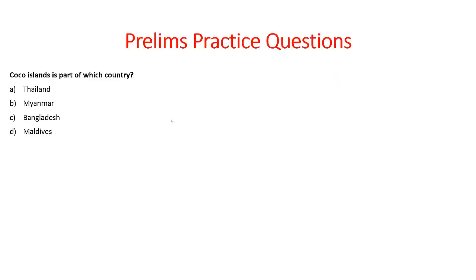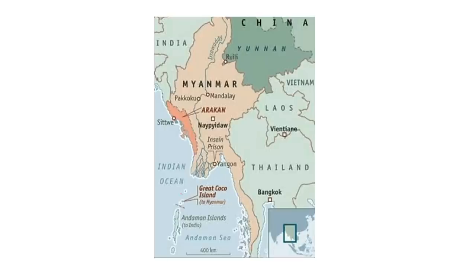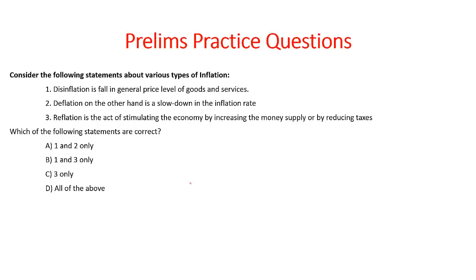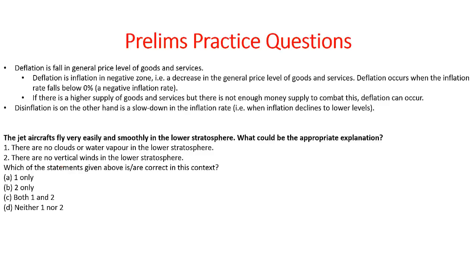Let's look into some prelims practice questions. The Coco Islands is part of which country? The answer is Myanmar. Kindly expect questions like this because previously UPSC has asked similar questions. Consider the following statements about various types of inflation: deflation is the fall in general price levels of goods and services; disinflation on the other hand is a slowdown in inflation rate; reflation is the act of stimulating the economy by increasing the money supply or by reducing taxes. Which statements are correct? The answer is three only.